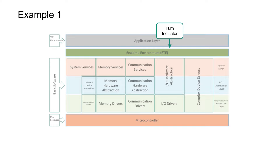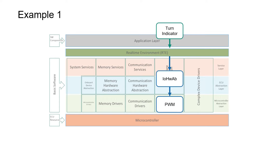Now let's understand a simple working principle behind the turn indicator on/off mechanism using AUTOSAR-compatible software. The first step is that a software component for the turn indicator requests to turn on the bulb. This request is routed through the RTE to the responsible BSW layer — in this case, the IO Hardware Abstraction — which in turn switches on a PWM signal on the output pin where the bulb is connected.